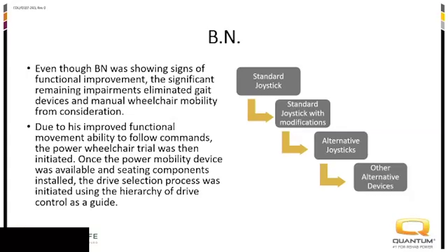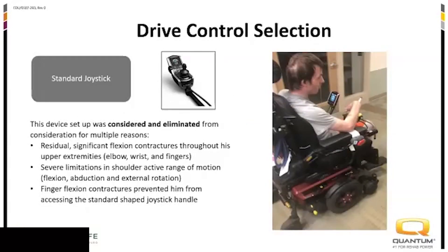We started to look at different drive control options and used the hierarchy of drive controls in our clinical decision-making process. Of course we started with the standard joystick, and it was pretty easy to see why we eliminated that from consideration right away — due to his significant flexion contractures and lack of active range of motion, there was no way to get him to access the joystick in the midline position. His adduction contractures of the shoulder and internal rotation were really bringing him in.